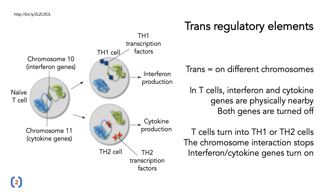Beyond cis-regulation, you can have trans-regulation — trans-regulatory elements on a different chromosome. Here we have the example of a naive T cell that turns into different types of TH cells, TH1 and TH2. In T cells, interferon and cytokine genes are physically nearby, and both genes are turned off. But when these T cells turn into different cell types — TH1 or TH2 — the chromosome interaction stops and breaks, and then the interferon and cytokine genes are turned on. So regulation is mediated by different chromosomes that either come together or move apart in three-dimensional space, controlling the creation of new types of cells.